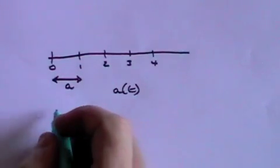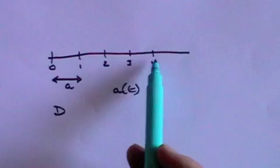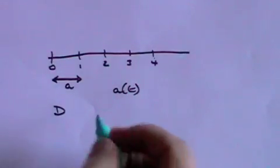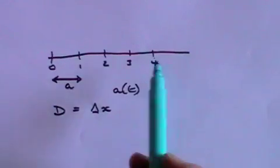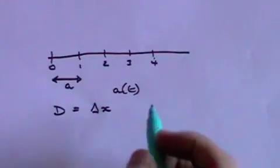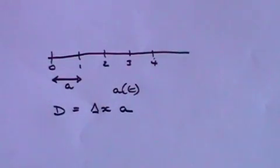Then we can say that the distance between any particular points we choose, let's say the distance between one and four, that distance will be the change in the x-coordinate, four minus one, times the distance between each coordinate, times a.